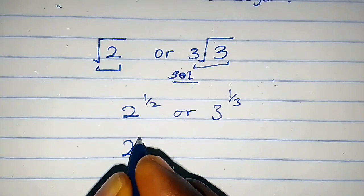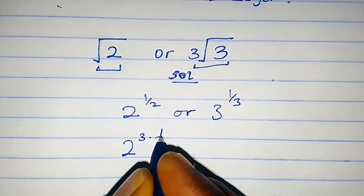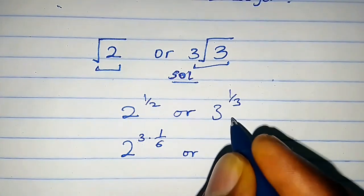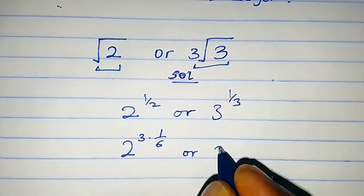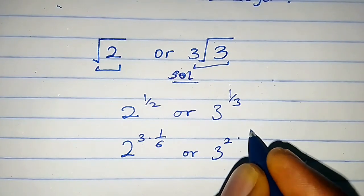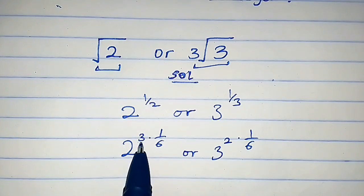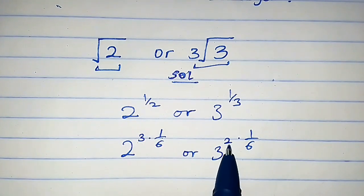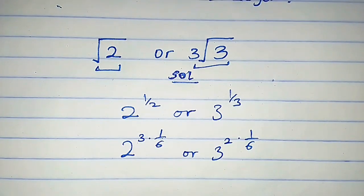2 raised to the power 1/2 can be written as 2 raised to the power 3 times 1/6. And 3 raised to the power 1/3 can be written as 3 raised to the power 2 times 1/6. When you use 3 to multiply this, we get this. When you use 2 to multiply this, we get this. So let's proceed further.